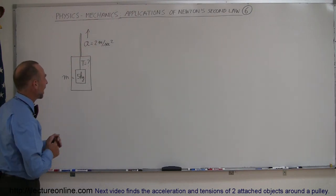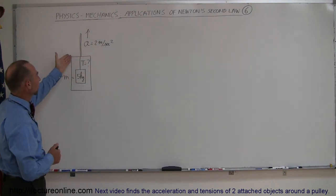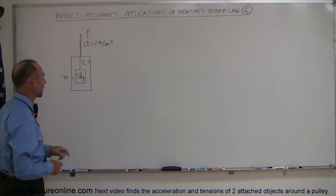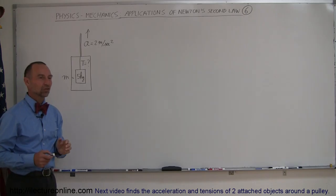And here's example number six. We have an object hanging from a string inside an elevator which is accelerating upward at 2 meters per second squared. The question is, what is the tension in the string?